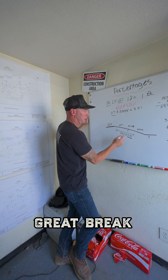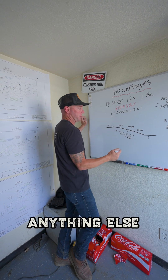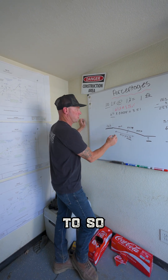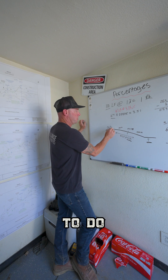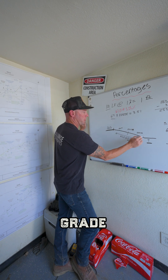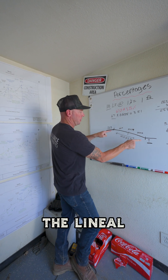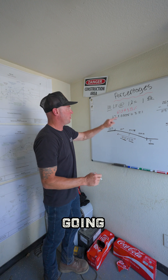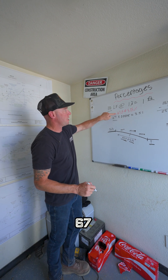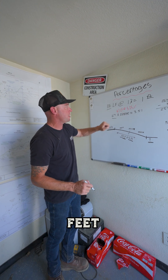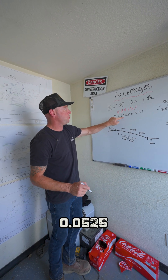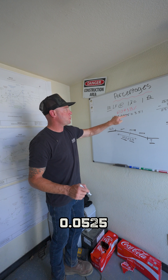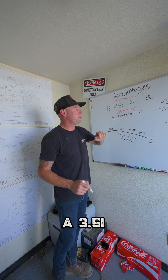It gives you the percentage of the grade break, but it doesn't give you anything else. So I need to get this elevation too. What I'm going to do is measure my grade break — the lineal footage came out to 67 lineal feet. So I'm going to take that 67 lineal feet and multiply it by 0.0525, which equals 3.51.